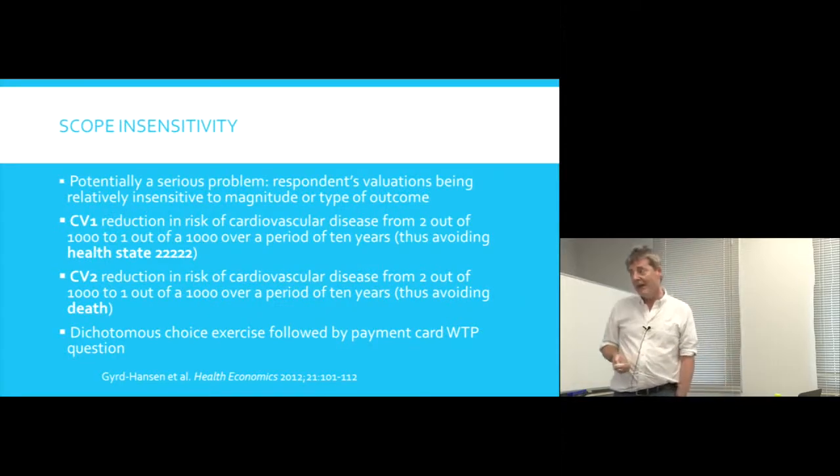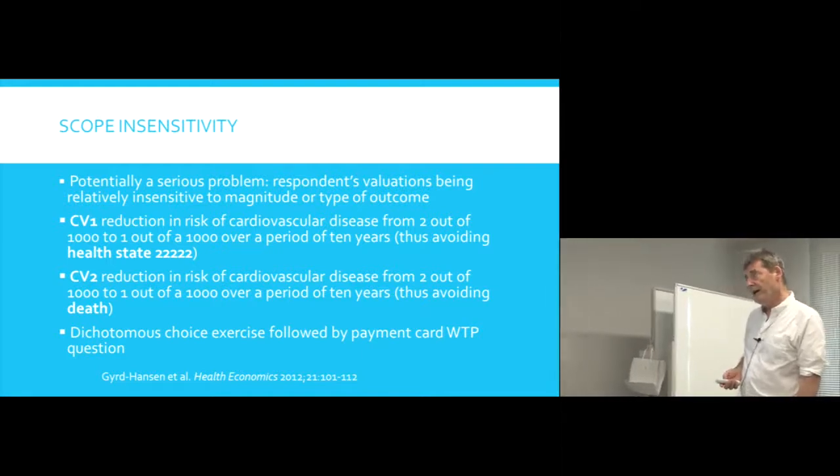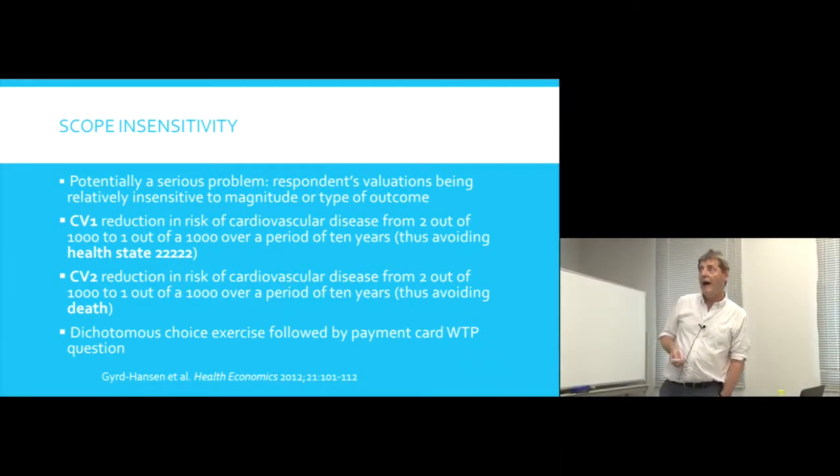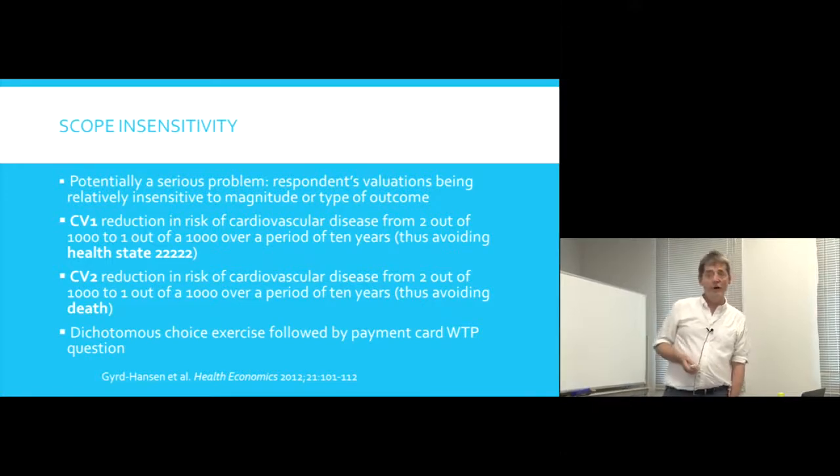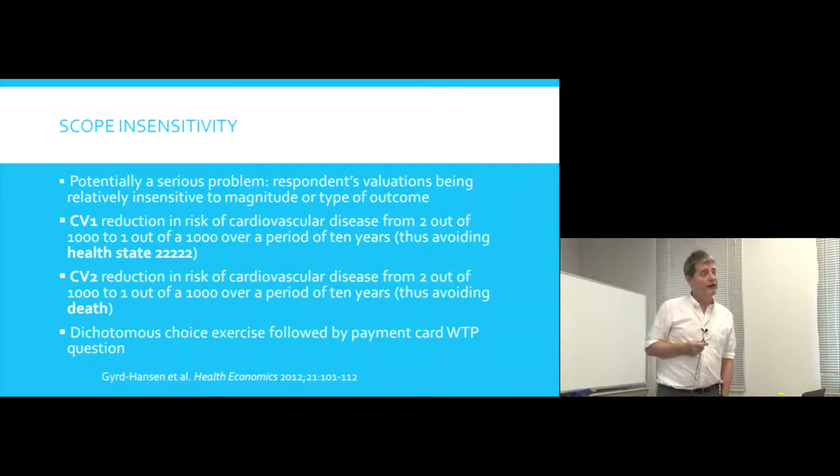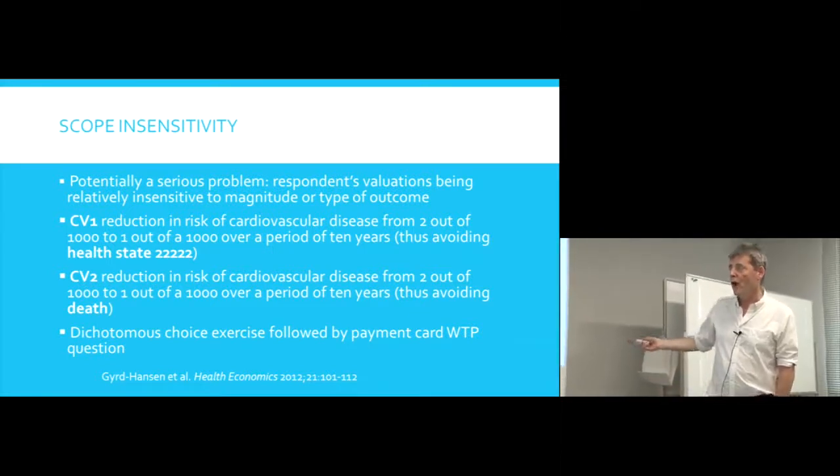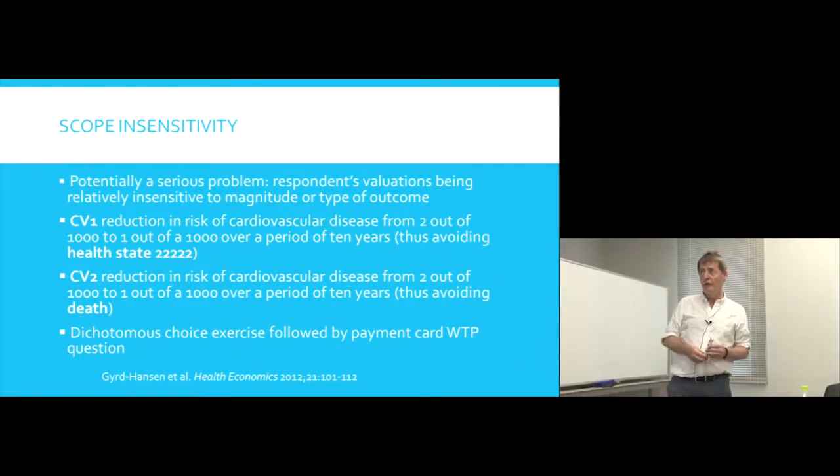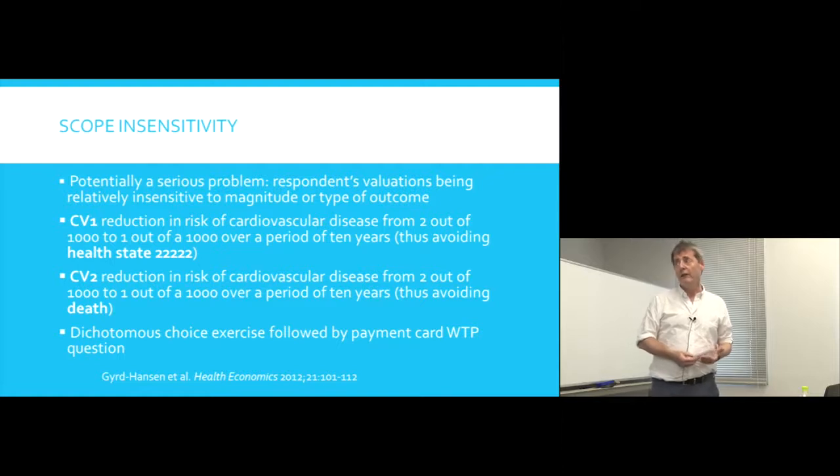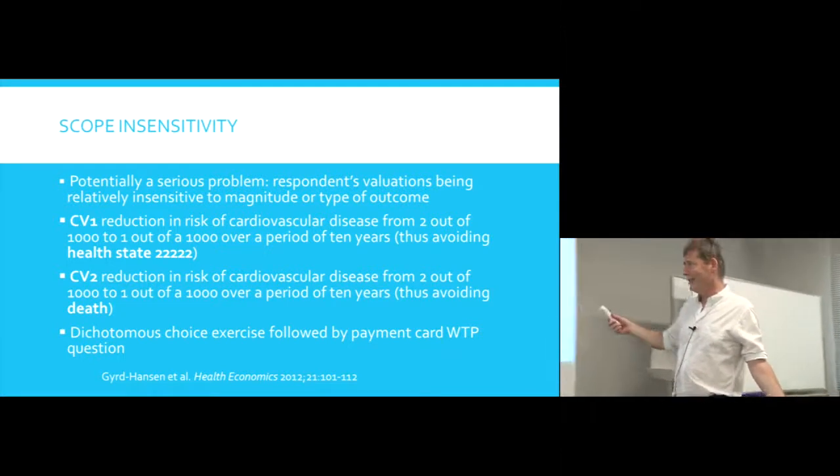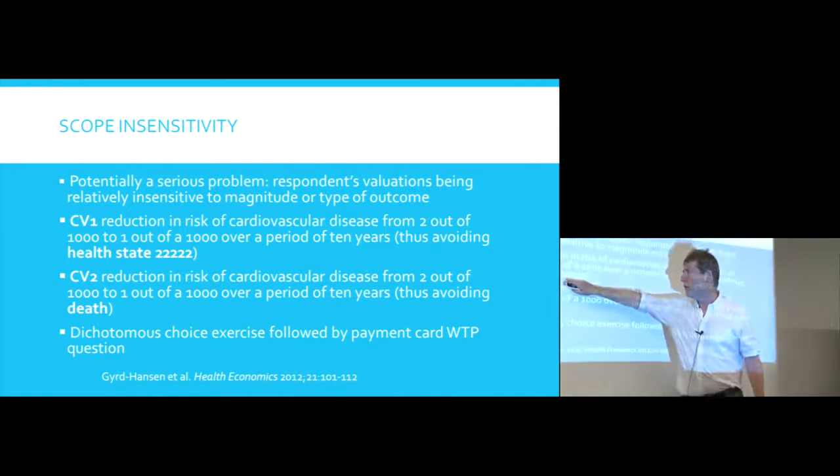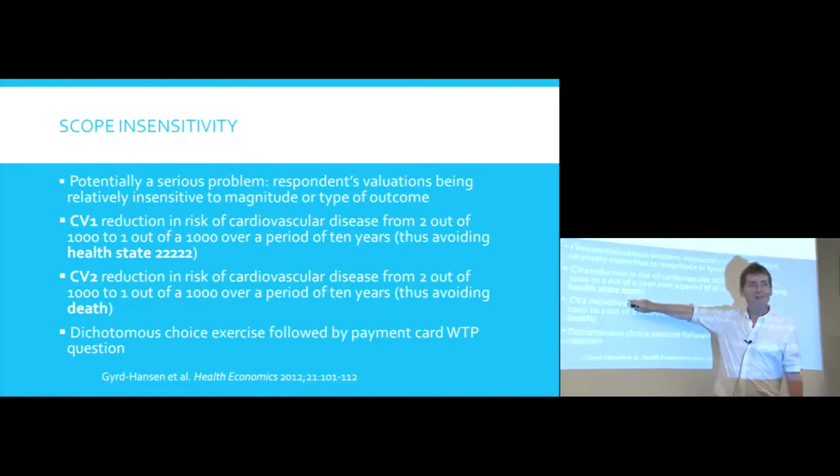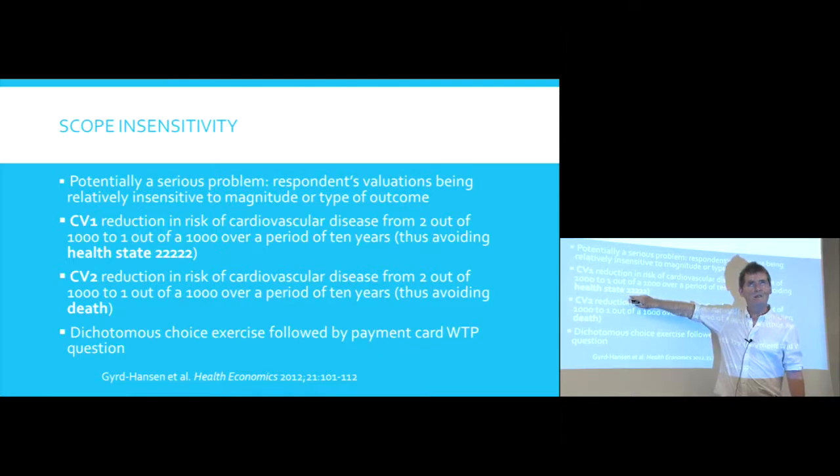This was a study done in Denmark, and it was looking at willingness to pay for reducing the risk of cardiovascular disease. And so the first option, CV1, was reducing the risk of cardiovascular disease from 2 out of 1,000 to 1 out of 1,000 over a period of 10 years. And this was restated to the individual as this would avoid our friend EQ5D, this would avoid this health state, 2, 2, 2, 2, 2.